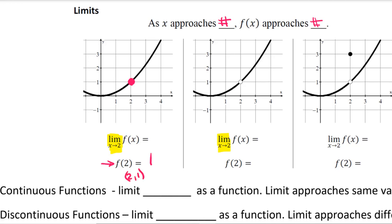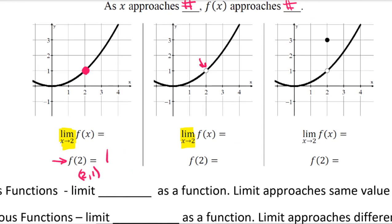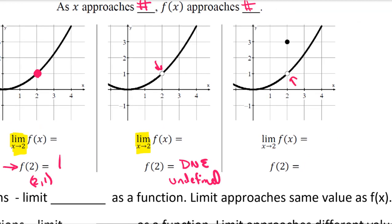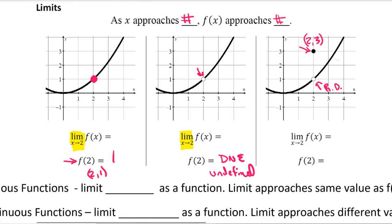That would be the point on that curve. On this middle function right here, there's a hole — a removable discontinuity. We would say f of 2 doesn't exist — DNE — or it's undefined, because we don't know what the value is at x equals 2; there's a hole there. On the third one, even though we have a hole, the function is defined with a corresponding y value of 3. So (2, 3) is a point — though that point is not on the curve, which is kind of weird. That's something we'll explore more when we get into continuity.